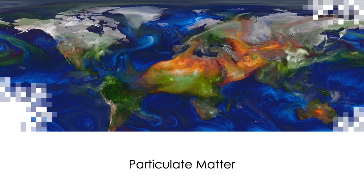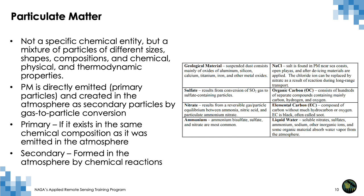Now let's understand some more details about particle pollution or particulate matter. Particulate matter, unlike ozone, is not a specific chemical entity, but it is a mixture of particles of different sizes, shapes, composition, and chemical, physical, and thermodynamic properties. If the particles are directly emitted and stay in the same chemical composition in the atmosphere, they are typically called primary particles, whereas secondary particles are formed in the atmosphere through chemical reactions. Here are some examples of typical primary and secondary particles which are present in polluted air.